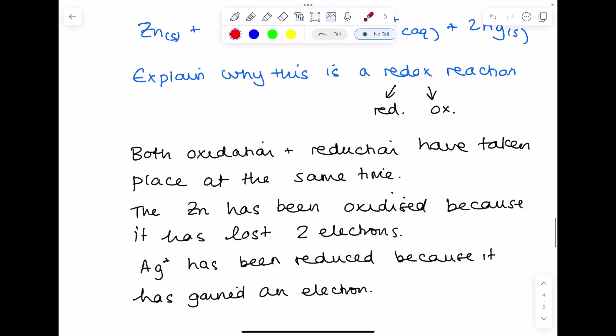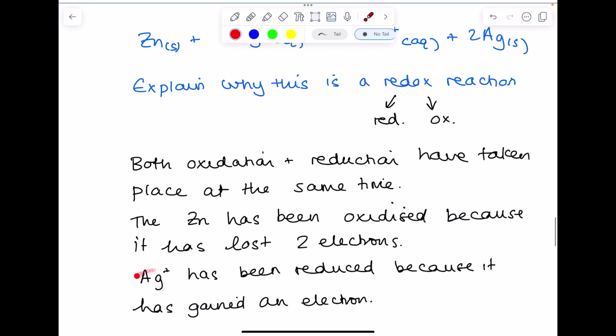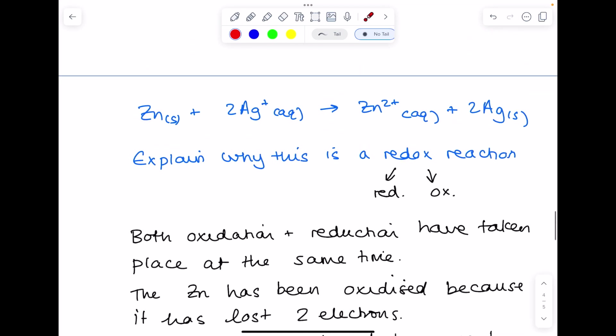So my take-home message is, be careful, it is the Ag+. You can't just write silver here. And this is what people are tempted to do. Make sure you point out the exact species because obviously if you said silver, it would be the wrong substance.